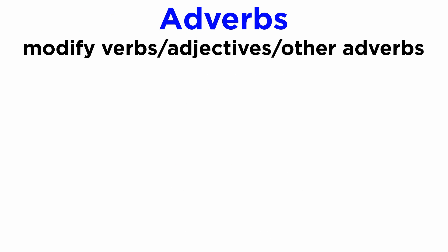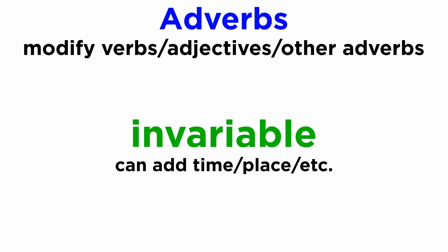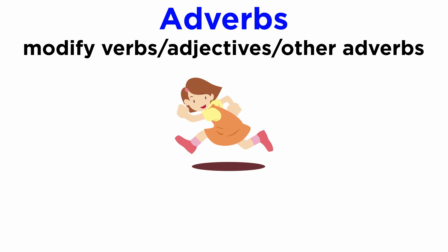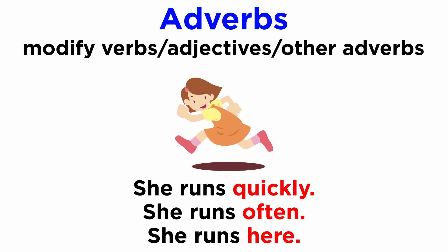Then we have adverbs. These are words which modify verbs, adjectives, and sometimes other adverbs. Adverbs are invariable in Latin and can add time, place, or other details. Some examples include: she runs quickly, she runs often, she runs here.